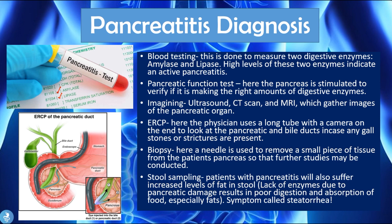ERCP allows the physician to use a long tube with a camera to look at the pancreatic and bile ducts for gallstones or strictures — narrowing of the ducts — that cause blockage in the flow of digestive enzymes into the duodenum. A biopsy of the pancreas can also be performed, using a needle to remove a small piece of tissue for further studies.